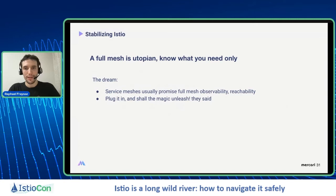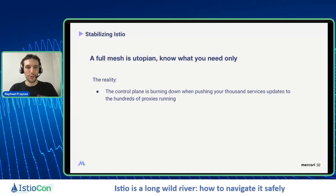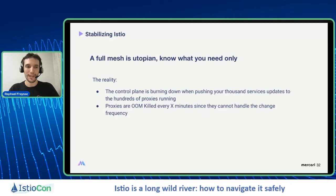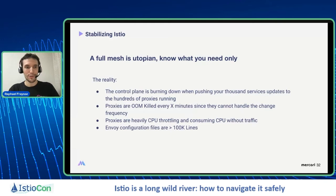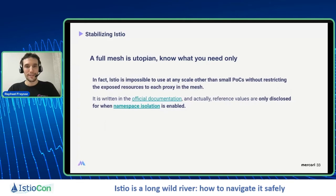The dream that service meshes usually provide is full mesh observability, reachability, and simplicity by just plugging it in. But the reality is different. The control plane is burning down when pushing thousands of service updates to hundreds of proxies. Your proxies are all killed every X minutes because they cannot handle the change frequency. Your proxies are CPU throttling and consuming CPU even without traffic. Resource usage is tremendous because of that. And your Envoy configuration files are terribly big. It's a reality far from the utopia. Istio is almost impossible to use at any scale beyond small POCs without restricting the exposed resources to each proxy in the mesh — it is even written in the official documentation.